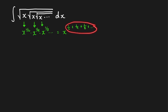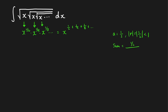This sum is just a geometric series where the first term is one half and the common ratio is one half. Since the absolute value of the common ratio is less than one, the series is convergent, so we can find its sum. The sum equals the first term over one minus the common ratio, which is one half over one half, equal to one. So the integrand is just x, and our integral is x squared over two plus C.